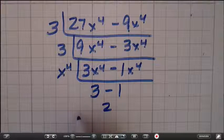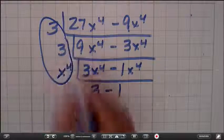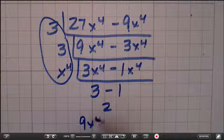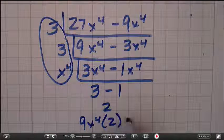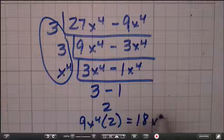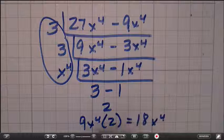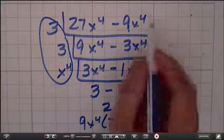So when I put all of this together, I'm going to multiply these, which is 9x to the 4th times 2, which is really 18x to the 4th. And you might be thinking, wow, that's weird because there's no plus or minus sign.